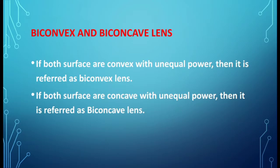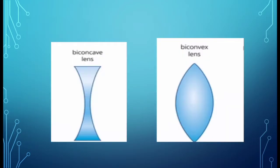Next, biconvex and biconcave lens. 'Bi' means two. In a biconvex lens, both surfaces are convex in nature with unequal power — for example, one surface has 2 diopter power and another has 3 diopter. In a biconcave lens, both surfaces are concave in nature with unequal power — for example, one surface has minus 2 diopter and another has minus 3 diopter. So in this type, both surfaces have the same nature but the power varies.